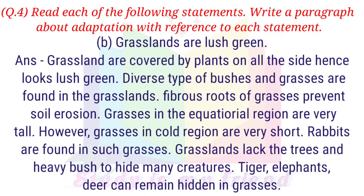B. Grasslands are lush green. Answer: Grasslands are covered by plants on all sides, hence they look lush green. Diverse types of bushes and grasses are found in grasslands. Fibrous roots of grasses prevent soil erosion. Grasses in the equatorial region are very tall; however, grasses in cold regions are very short. Rabbits are found in lush grasses. Grasslands lack trees and heavy bush, but tigers, elephants, and deer can remain hidden in grasses.